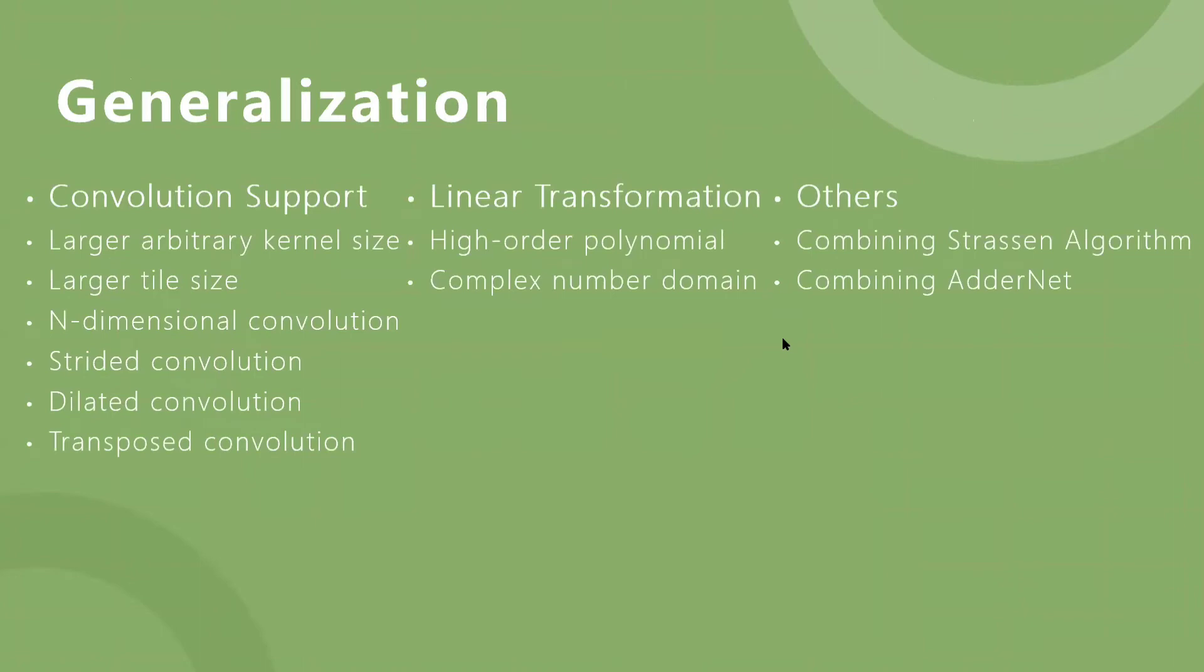Next, we talk about the generalization of Winograd convolution. The introduction of Winograd convolution is a milestone, but the convolution only supports two-dimensional convolution, operates with R equals 3 and R equals 2, and the tile size does not exceed 6. But this is far from covering the various types of convolution operators in modern CNNs. So there are many subsequent studies that generalize Winograd convolution to various types. The extended Winograd supports convolution to large arbitrary kernel size, large tile size, n-dimensional convolution, strided convolution, dilated convolution, and transposed convolution.